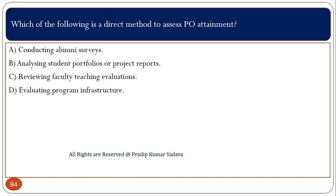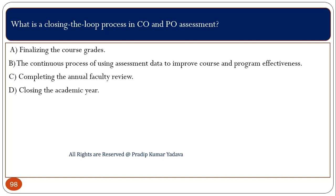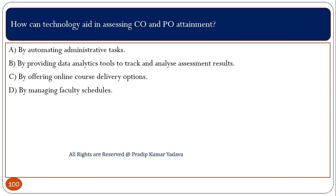Which of the following is a direct method to assess PO attainment? As we know, direct methods cover examination — this can be student portfolio or project report. Which of the following is an example of an indirect method? Basically here we are talking about survey. What is the 'closing the loop' process in CO and PO assessment? It is the continuous process of using assessment data to improve course and program effectiveness. How can technology aid in assessing CO and PO attainment? By providing data analytics tools to track and analyze the assessment results.